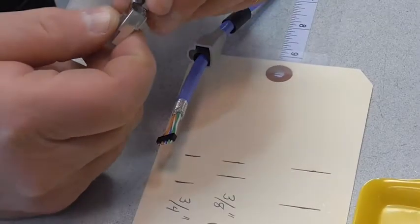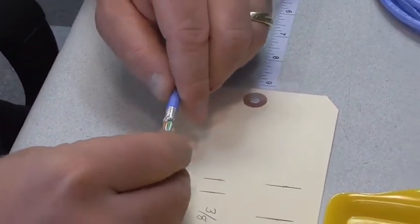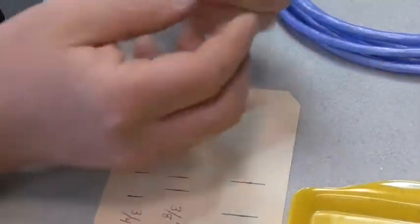Bend the connector body strain relief tab down to allow wires and load bar installation. With the load bar positioned at the end of the wires, install the connector body onto the wires and load bar.